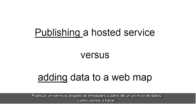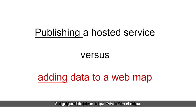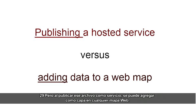Publishing a hosted feature service from a data file is quite different from adding that same file to a web map. When you add data to a map, it lives in the map. If someone wants to use it in a different map, they need the source file. But when you publish the file as a service, it can be added as a layer to any web map.